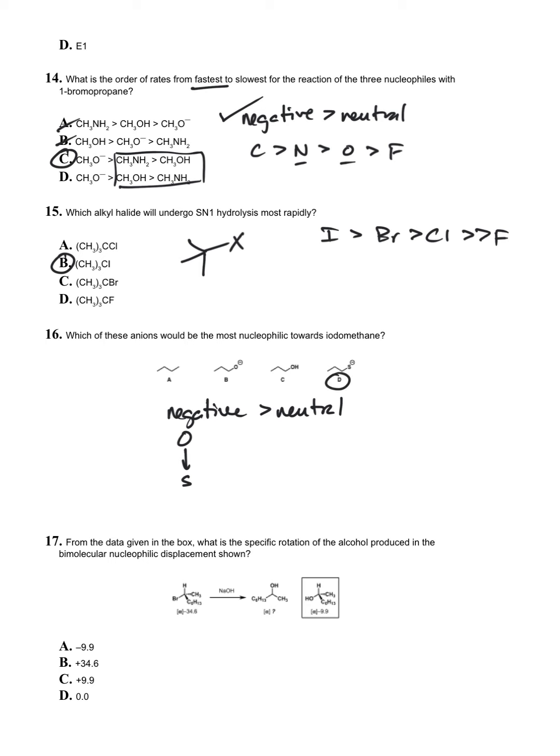Question seventeen: from the data given in the box, what is the specific rotation of the alcohol produced in the bimolecular nucleophilic displacement shown? The connection between these structures is basically showing you retention. We know that SN2 occurs with inversion. If the retention has a negative 9.9, the inversion has to be plus 9.9. So this is C on this copy of the exam.